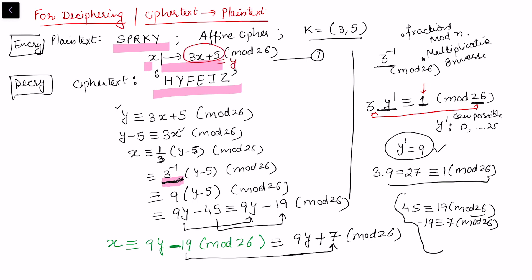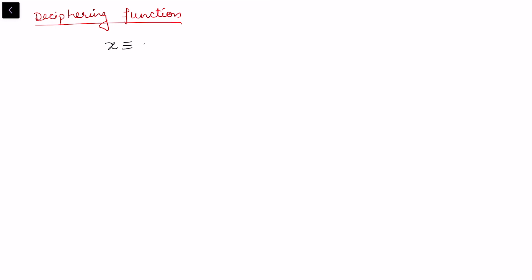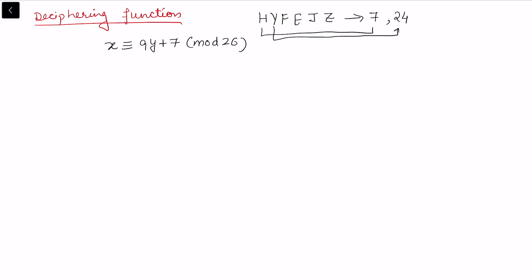Now using the deciphering function x ≡ 9y + 7 mod 26, we apply it to the ciphertext H, Y, F, E, J, Z. Their numerical digits are: H=7, Y=24, F=5, E=4, J=9, Z=25.